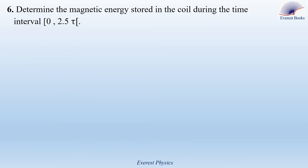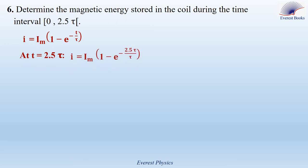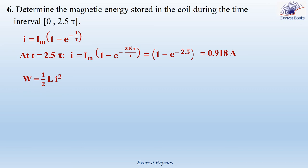Part 6: determine the magnetic energy stored in the coil during the time interval 0 to 2.5τ. The magnetic energy stored in the coil is given by W equal to half·L·I². To find this energy, we determine the current at T equal 2.5τ: I equal IM·(1 minus e to the power minus T/τ), so at T equal 2.5τ, the current is approximately 0.918 ampere. Using W equal half·L·I², replacing L by 0.1 henry and I by 0.918, the magnetic energy stored is 0.05 joules.